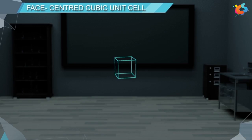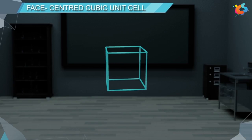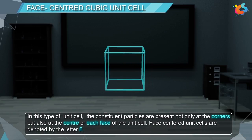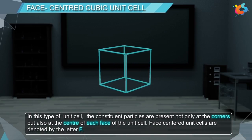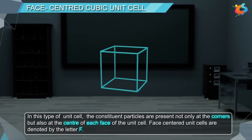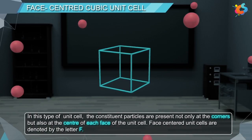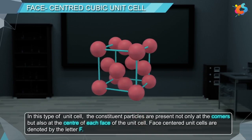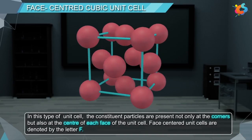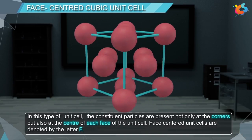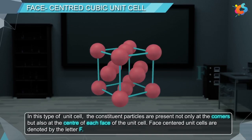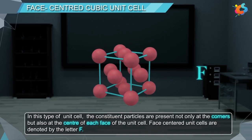Face Centered Unit Cell: In this type of unit cell, the constituent particles are present not only at the corners, but also at the centre of each face of the unit cell. Face Centered Unit Cells are denoted by the letter F.